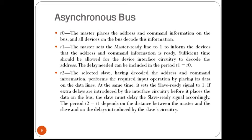The delay T1-T0 is intended to allow for any skew that may occur in the bus. Skew occurs when two signals simultaneously transmitted from one source arrive at the destination at different times, because different lines of the bus may have different propagation speeds. To guarantee that the master ready signal does not arrive at any device ahead of the address and command information, the delay T1-T0 should be larger than the maximum possible bus skew.